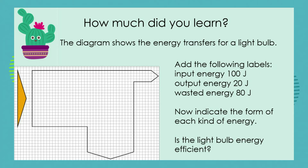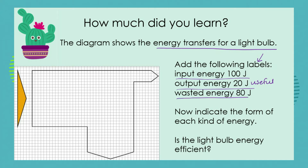Our first question asks us about a Sankey diagram. We've learned lots about Sankey diagrams, how to draw them and what information they can give us. We're told the diagram shows energy transfers for a light bulb and it asks us to add in the following labels: the input energy, the useful output energy, the wasted output energy, and the forms of each kind of energy, then answer a question on energy efficiency.